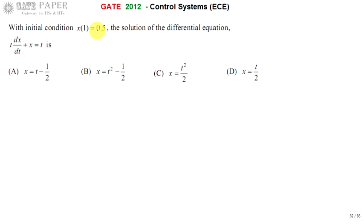The initial value x(1) = 0.5 means x(t) at t = 1 equals 0.5. From this, the t value is 1 and x value is 0.5. When t equals 1, then x value is 0.5. You must get this information.